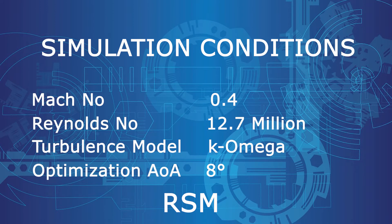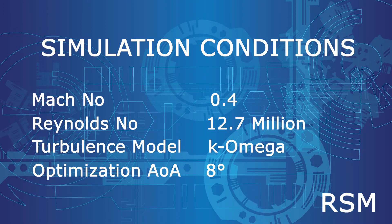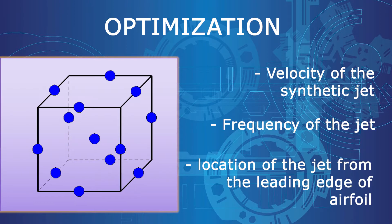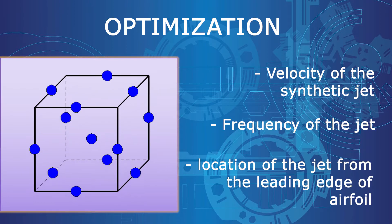Response Surface Methodology was selected for the optimization process, as it facilitates evaluating the effects of multiple factors and their interactions on one or more response variables. Three design variables were decided: velocity of the synthetic jet, frequency of the jet, and location of the jet from the leading edge of the airfoil. Box-Behnken design was selected for the design of the experiment.